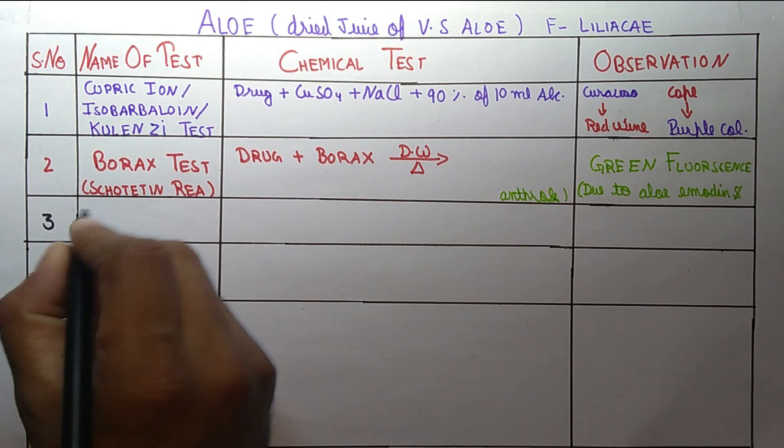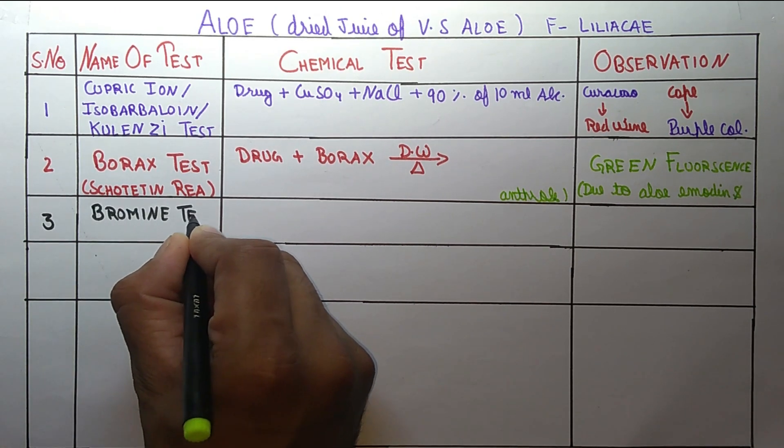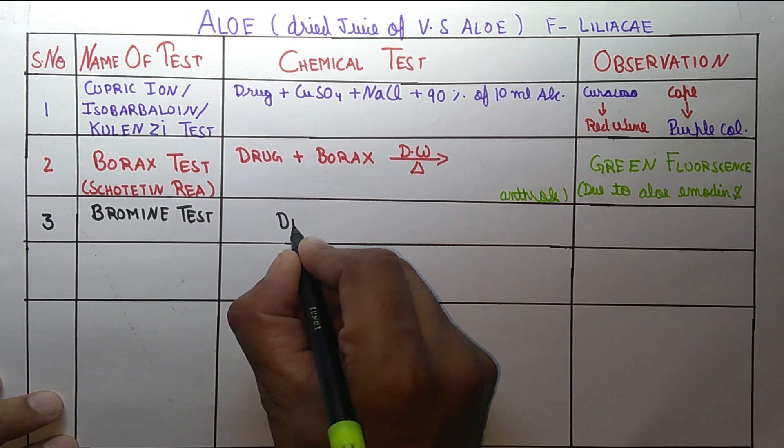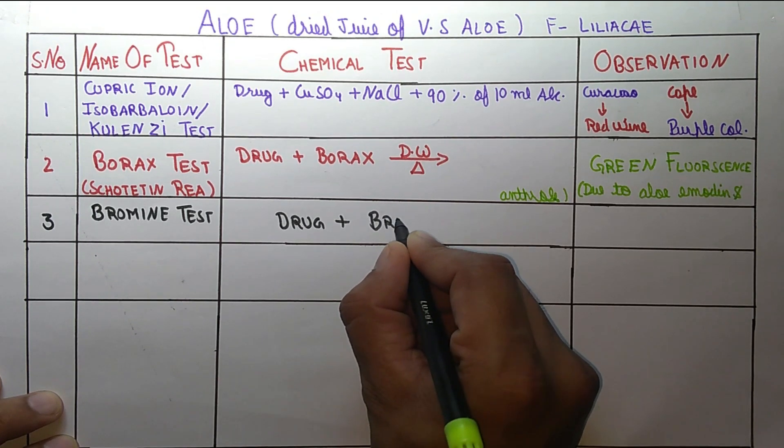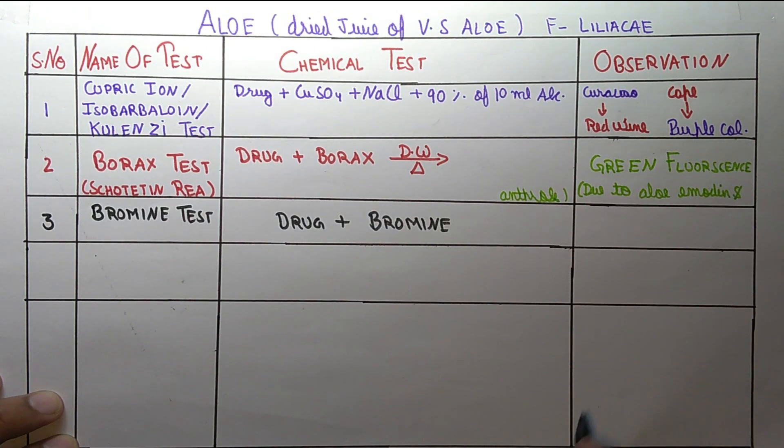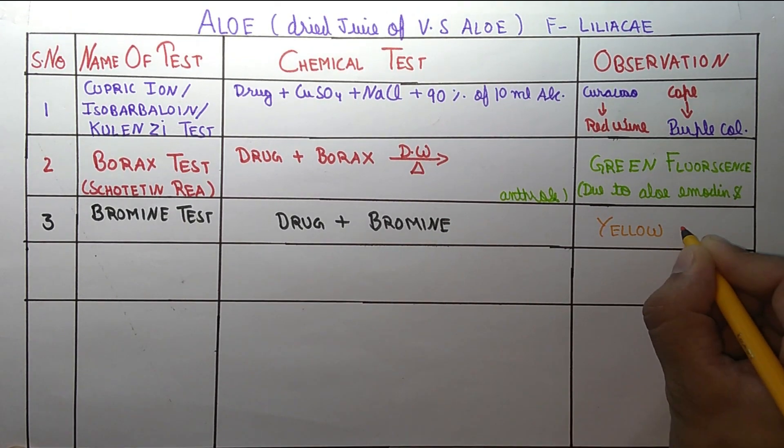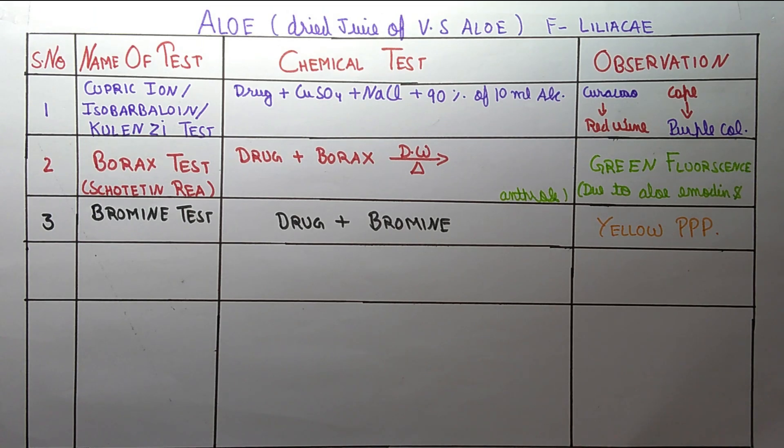Now coming on the next test, third test is Bromine test. In this test we take drug plus bromine and it gives yellow precipitates. I hope students these tests are very easy for you to learn.